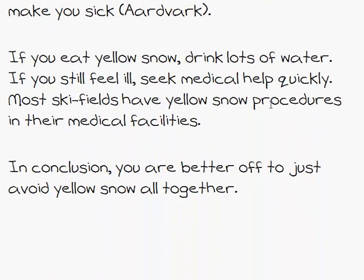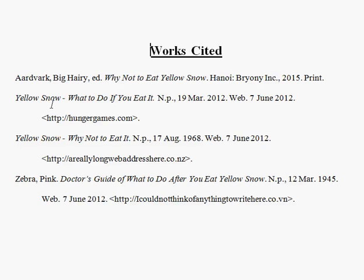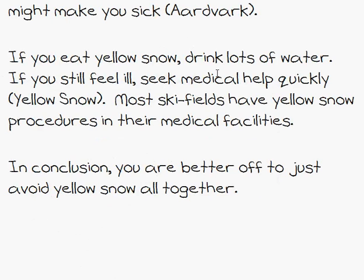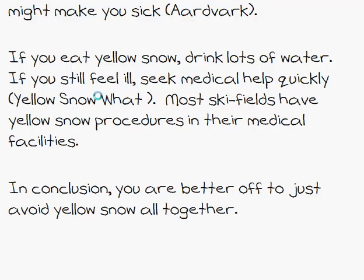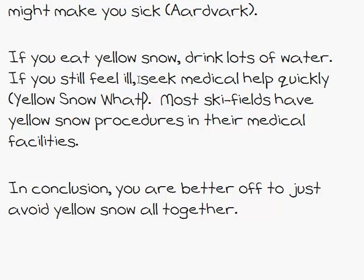Scrolling on through the essay — I also read a sentence in a source called Yellow Snow: Why Not to Eat It, so we'll put in 'Yellow Snow' again. Now, one thing you'll notice is that we've got two sources both called Yellow Snow. Are these the same source? No, they're not — they're different. In-text citations are always the first one to two words from your works cited. In this case we have two with the same first two words, so we need to add a third word to make them easily distinguishable. So this one becomes 'Yellow Snow Why' and this one becomes 'Yellow Snow What.' The idea of in-text citations is to be as short as possible while allowing you to distinguish which source you're referring to. Most ski fields have those procedures in medical facilities — I read that in Zebra Pink again, so I'll put in 'Zebra.'